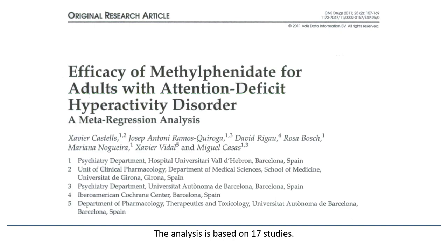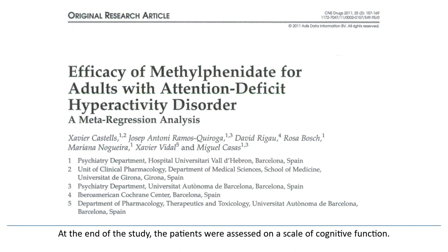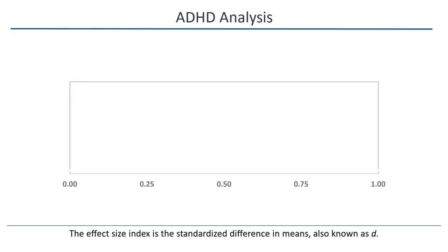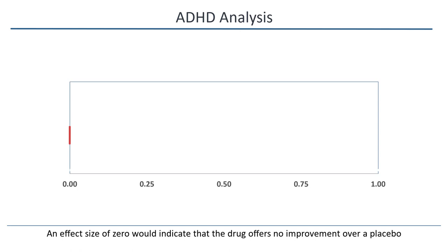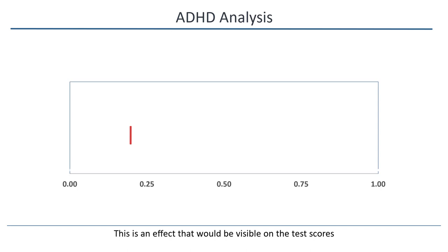Each study was a randomized controlled trial where the patients were assigned to receive either methylphenidate or a placebo. At the end of the study, the patients were assessed on a scale of cognitive function. The effect size index is the standardized difference in means, also known as D. An effect size of zero would indicate that the drug offers no improvement over a placebo. An effect size of 0.20 would be considered a small effect — this is an effect that would be visible on the test scores, but the patient might not be aware of any change in their behavior.